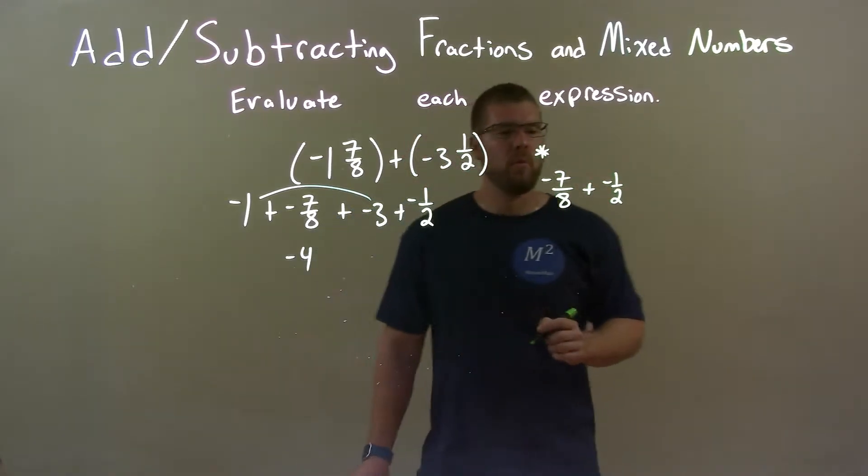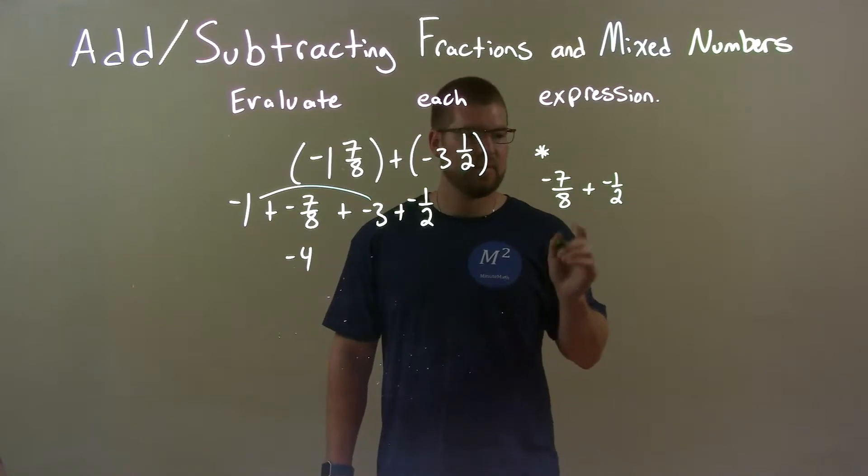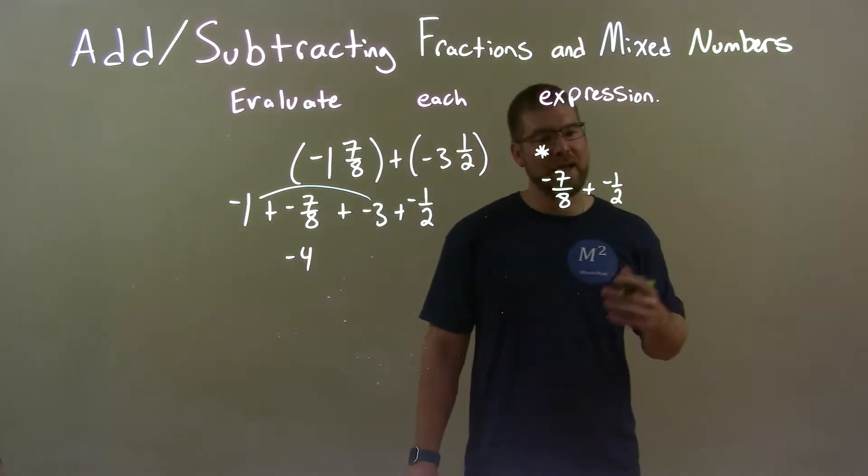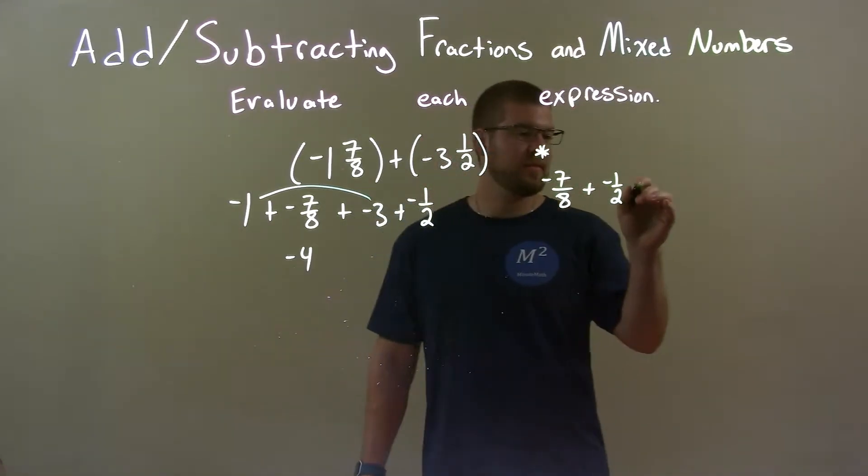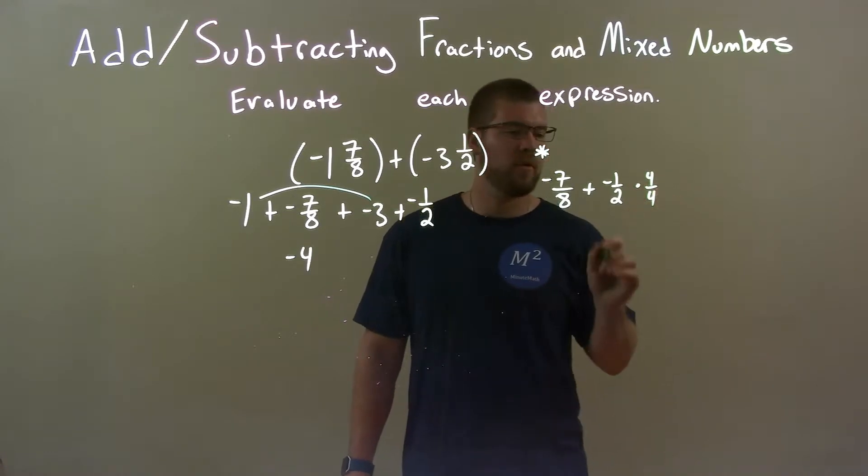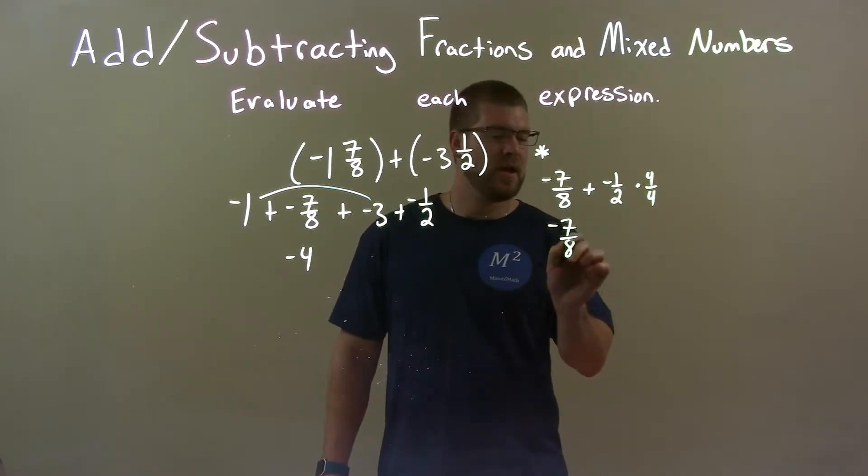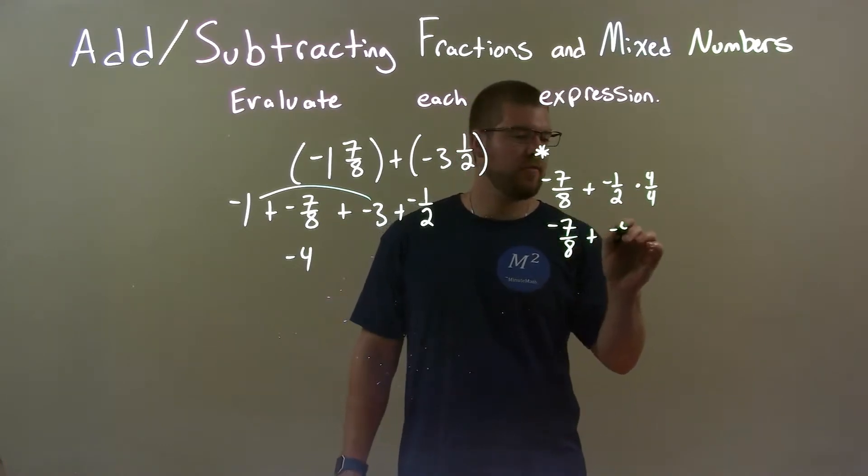Well, we need to have the same base. So, I know that negative 1 half is the same thing as negative 4 eighths, and that's going to have the same base. And essentially, what I'm doing is multiplying this by 4 over 4, trying to get that denominator there. So, negative 7 over 8 plus a negative 4 eighths.